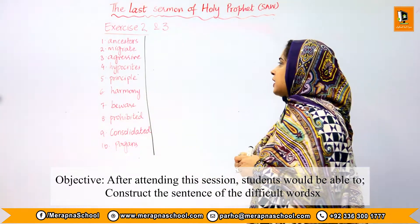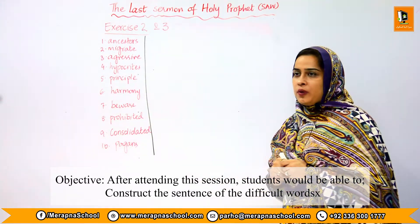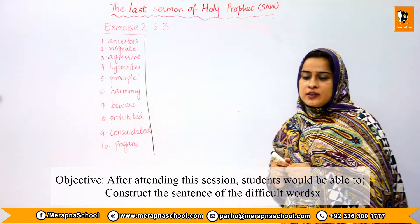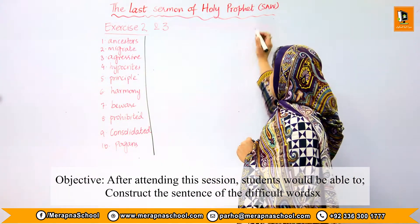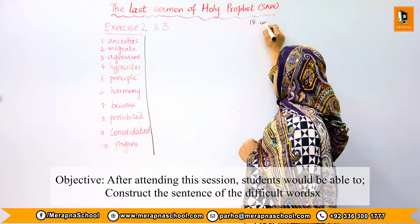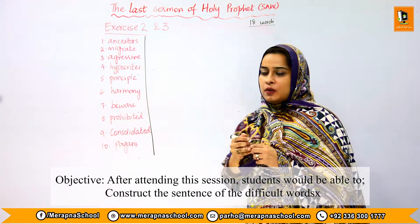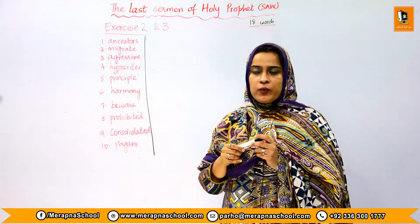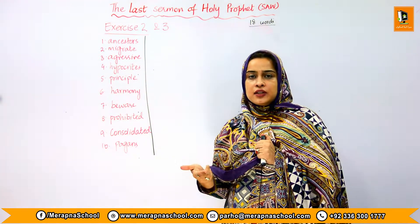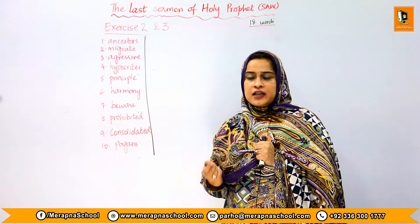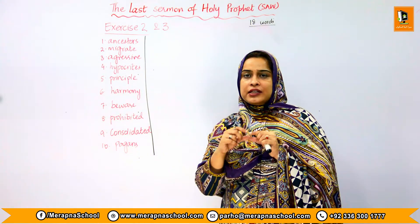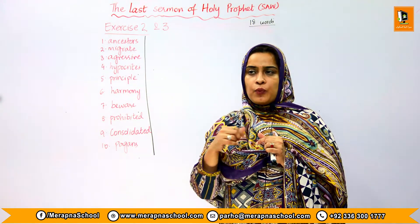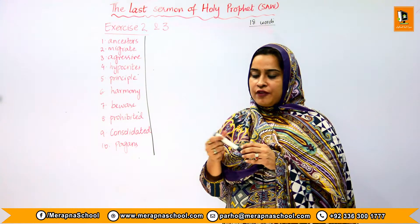Now let's move on to exercise number two and three. Exercise two is about words — there are 18 words total over there. You have to work in pairs to find these words in the text. The 18 words are present in the text and you have to find them and infer the meaning — what does that particular word mean in that text.